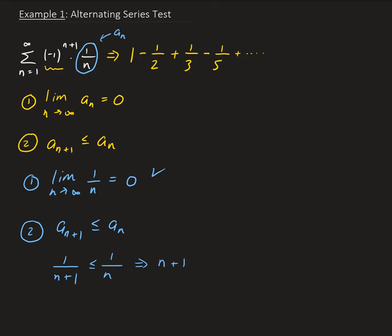We can multiply n on both sides and do the same thing with n plus 1. And we end up with this. So this is going to give us 0 less than or equal to 1. So this shows us that it's true for all n.